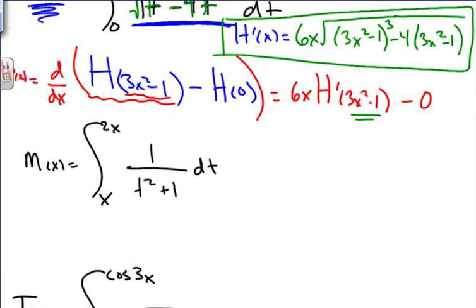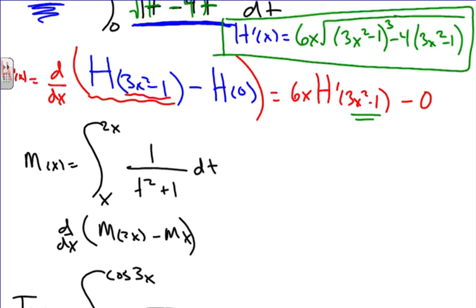Let's try another one. We want to find m prime of x. First, think about what happens when we find the antiderivative and plug in the limits — we get m of 2x minus m of x. Taking the derivative, we apply the chain rule: the derivative of m composed of 2x times the derivative of the inside, which is 2, minus the derivative of m of x.